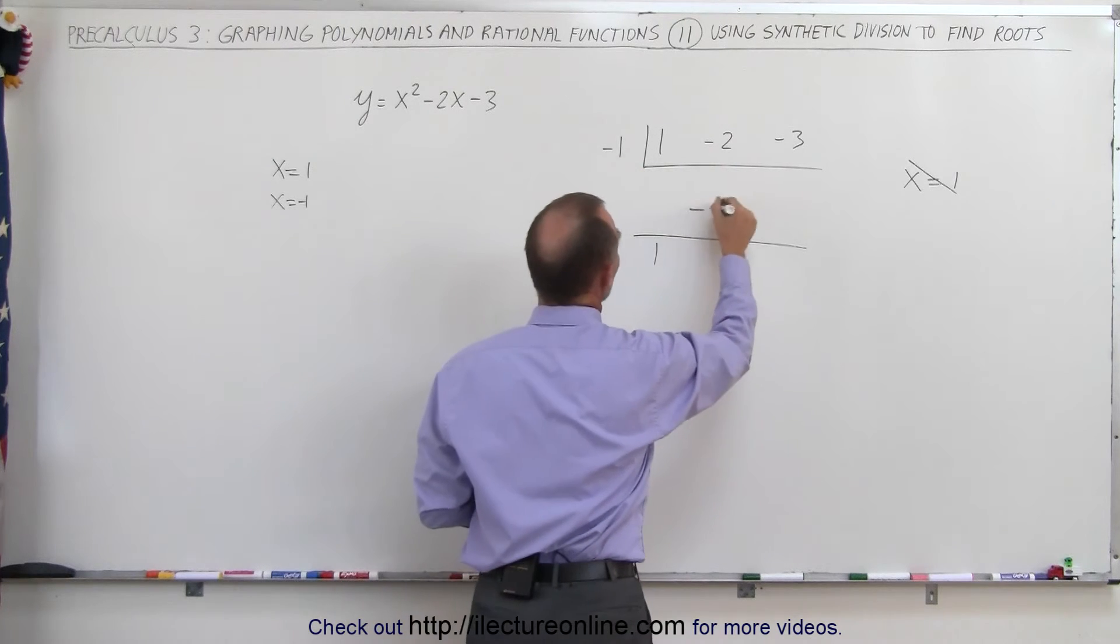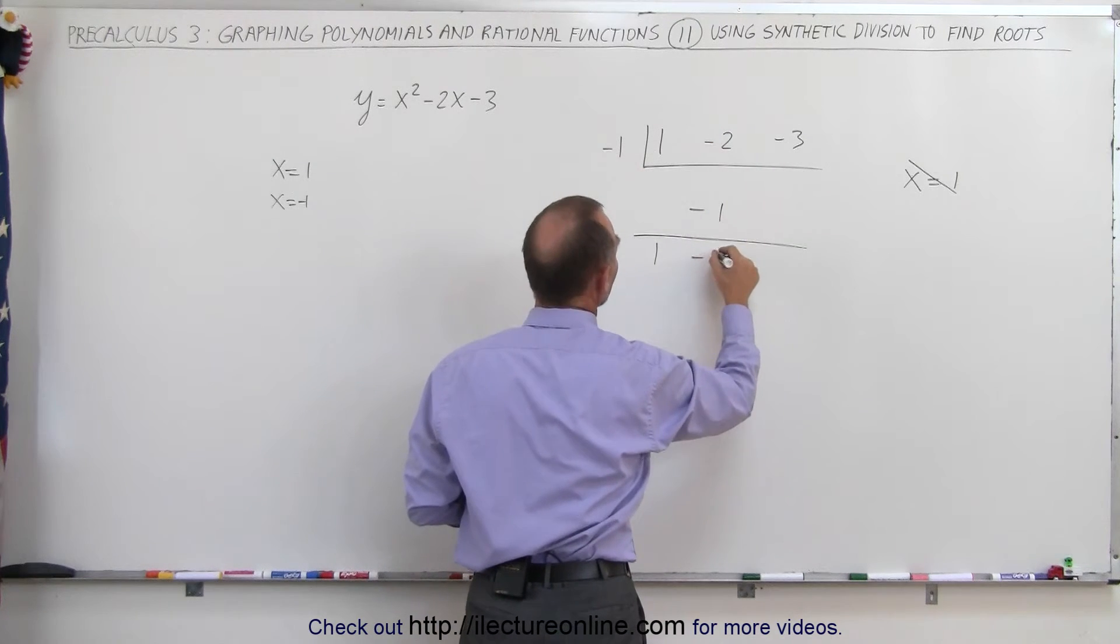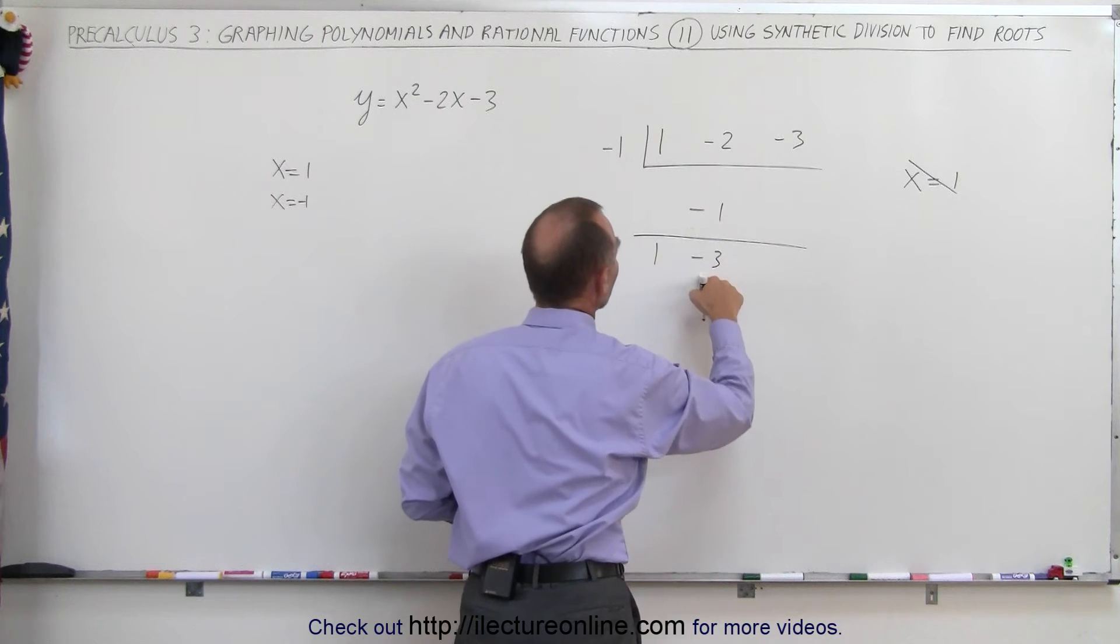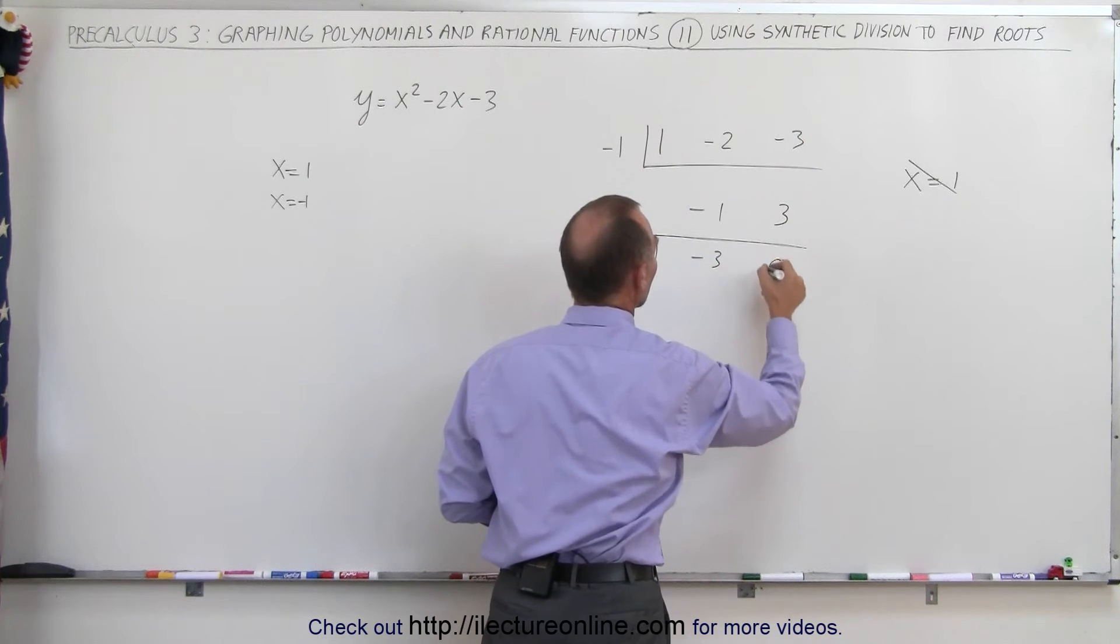Negative one times one is a negative one. Add these together, you get a negative three. Negative one times a negative three is a positive three. Add these together, you get a zero.